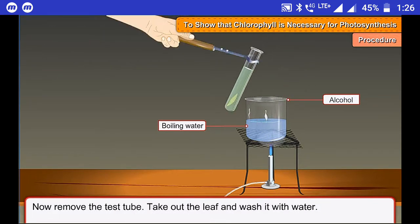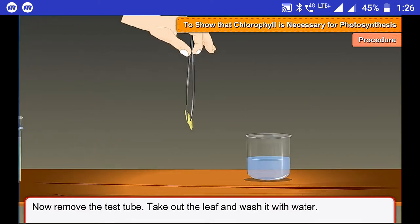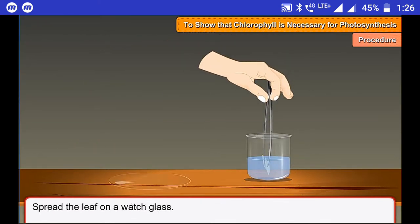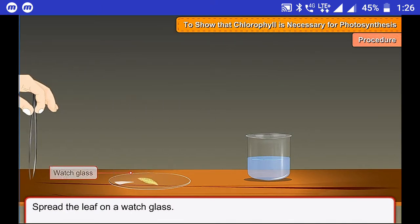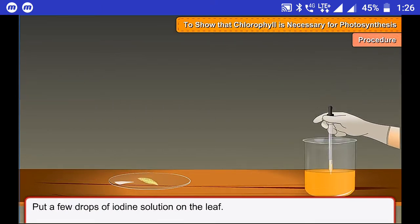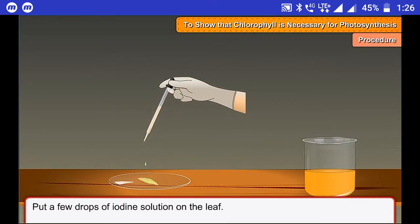Now remove the test tube. Take out the leaf and wash it with water. Spread the leaf on a watch glass. Put a few drops of iodine solution on the leaf.